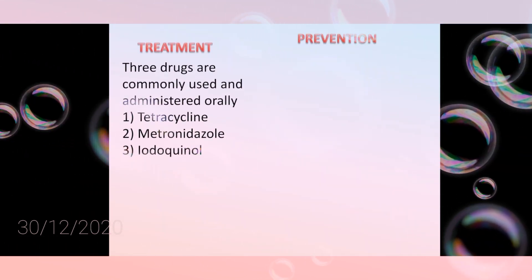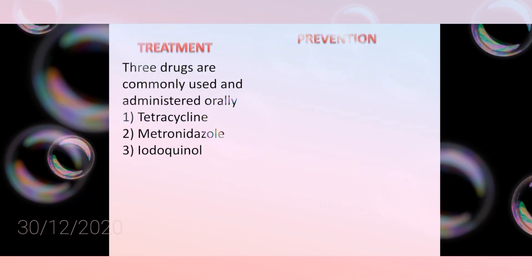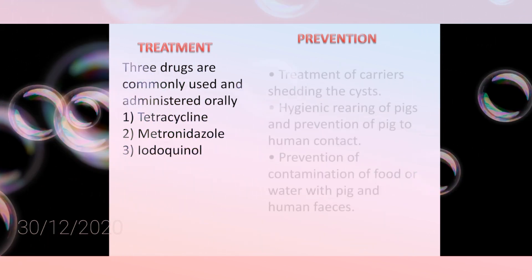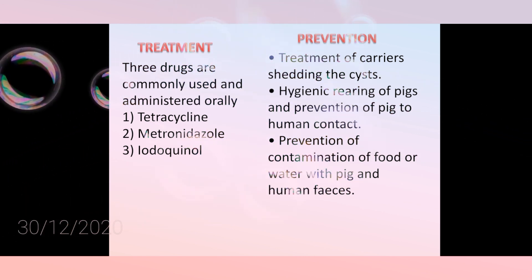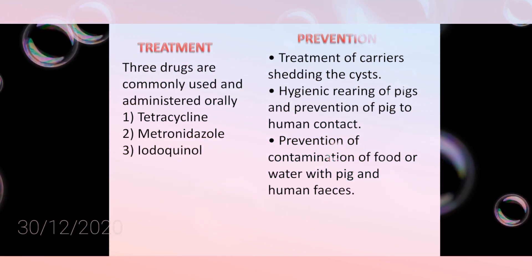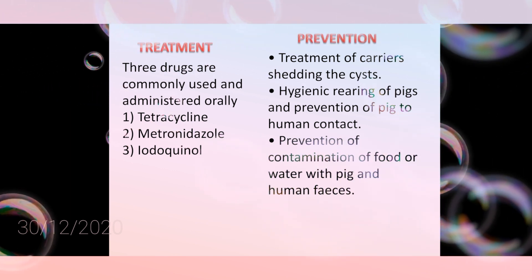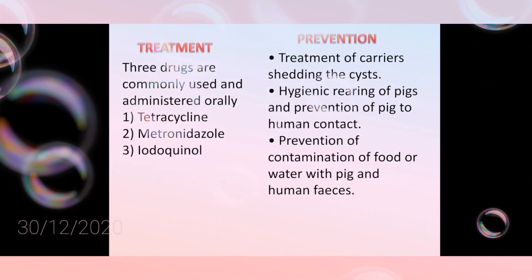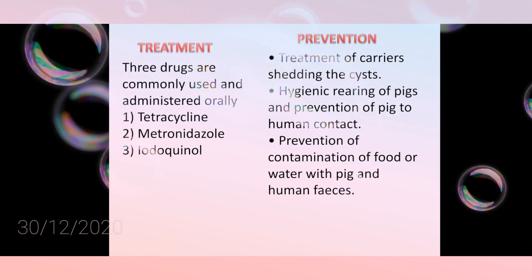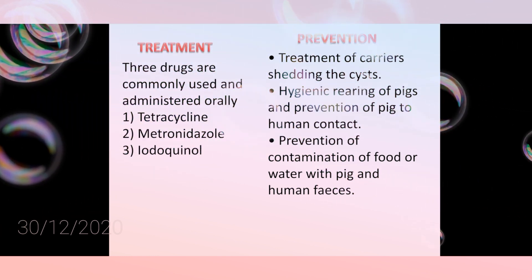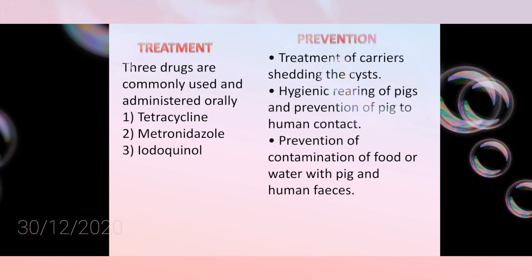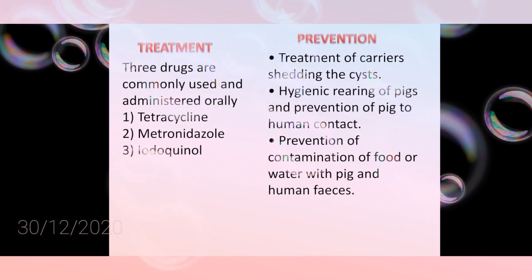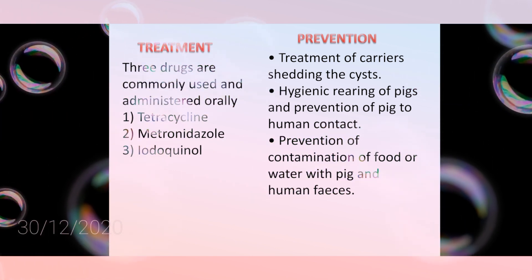Treatment uses mainly three drugs: tetracycline, metronidazole, and iodoquinol. Prevention includes treatment of carriers shedding cysts, hygienic rearing of pigs, prevention of pig-to-human contact, and prevention of contamination of food or water with pig and human feces. This disease requires important preventive measures, as the reservoir host and contaminated food and water are the main causes of transmission.